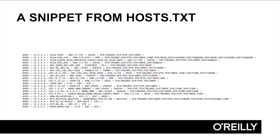Here's a snippet from hosts.txt. The format isn't too different from the UNIX /etc/hosts file or the Windows hosts file, if you're familiar with those. Each line contains information about a single host, including its IP address in the second field, the host's canonical or official name at the beginning of the third field, optionally followed by one or more aliases, then the hardware that ran the host, the operating system it ran, and finally a list of services it supported.